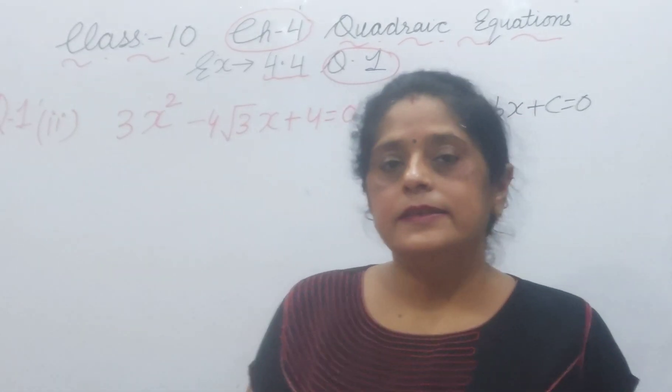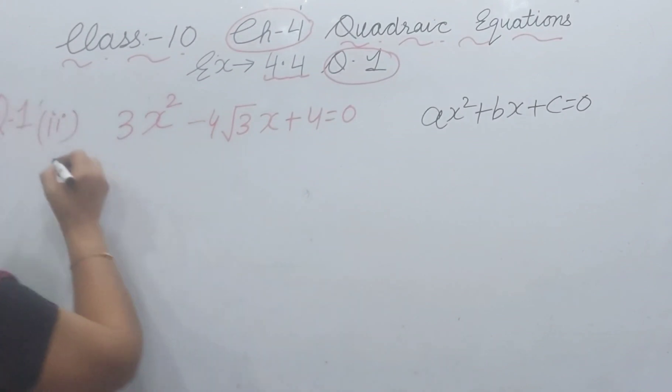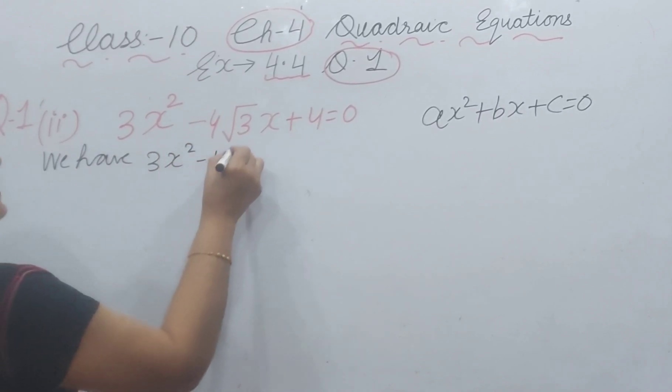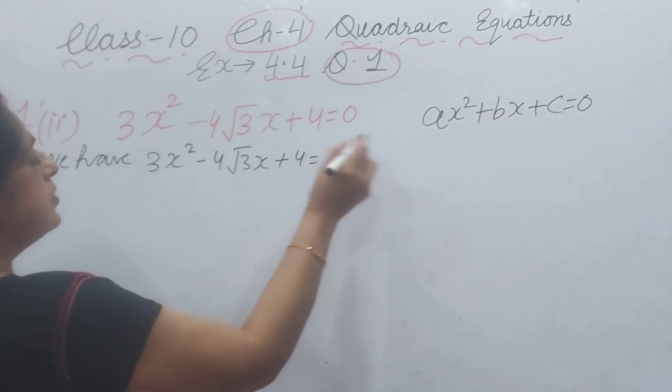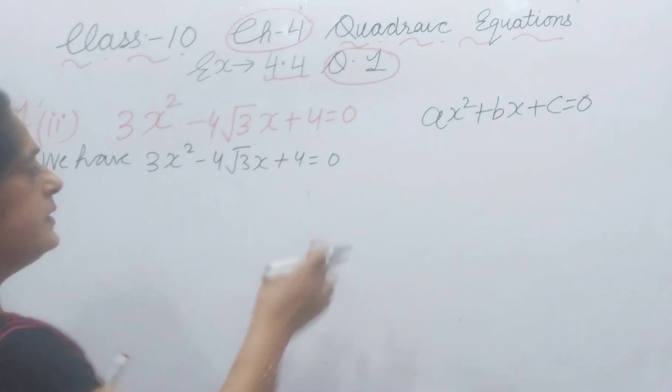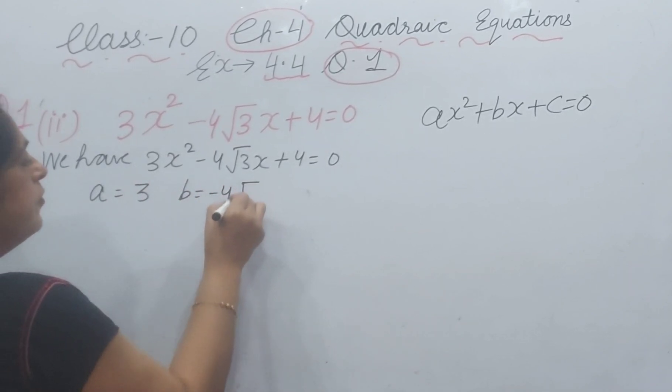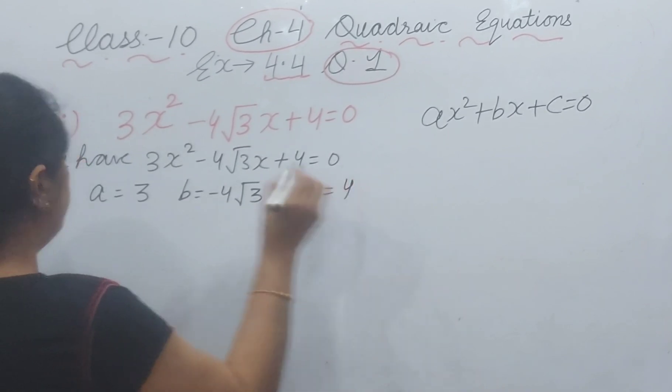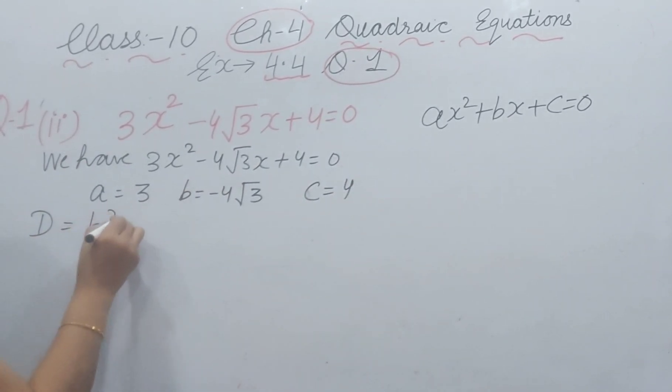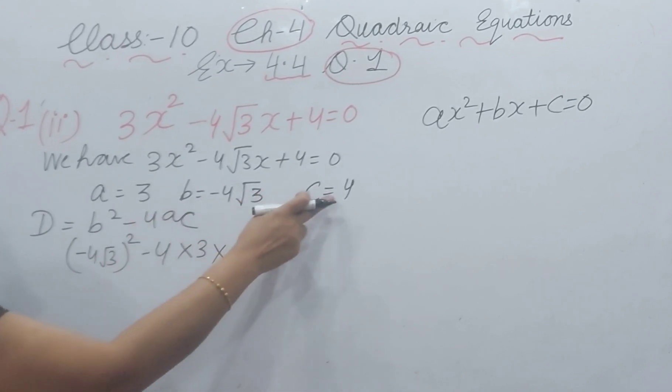We have 3x² - 4√3x + 4 = 0. This is the standard form of quadratic equation. Compare: a is 3, b is -4√3, and c is 4. We will find D which is equal to b² - 4ac. b is -4√3 whole squared, minus 4 into a (which is 3) and c is 4.